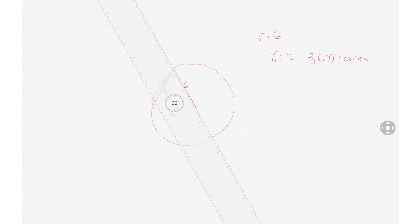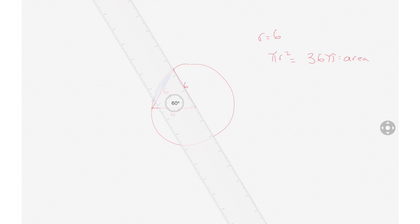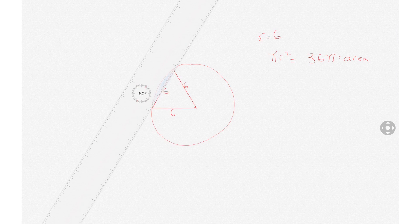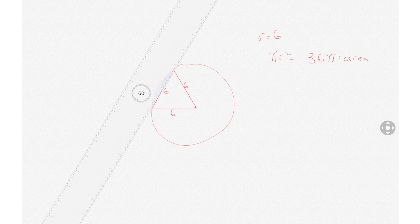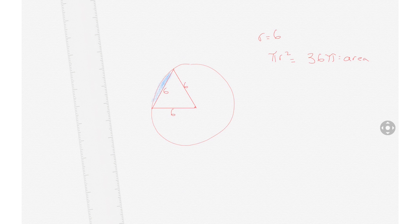Now what that means is we have a section of the circle that opens up to a 60 degree angle, and there is a ratio where we can get the area of that section of the circle.